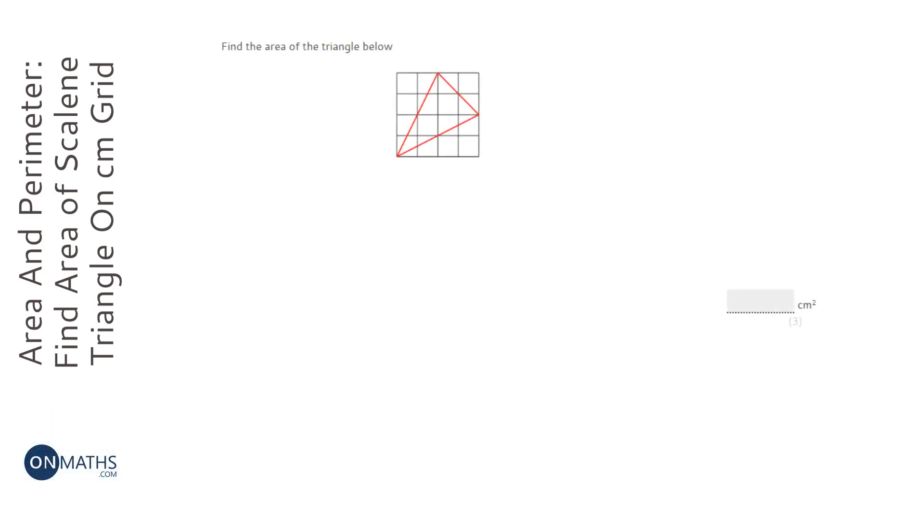Okay, so this looks like a really simple question, but it's not that simple. If you have a look at the triangle itself, the problem we have with it is to work out the area, we do the base times the height. The problem is we haven't really got a base and a height that are at right angles to each other, and a base and a height must be at right angles. So we can't really use that method at all. So we've got to find a different method for doing it.